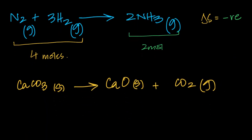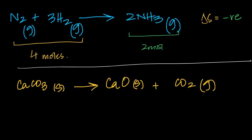The second example is a group two decomposition reaction, going from one mole of solid to making one mole of solid and one mole of gas. One mole of gas will always supersede solids and liquids — I ignore everything else if a gas is present. Here it went from zero moles of gas to one mole of gas. So delta S increases — entropy is positive for this reaction.